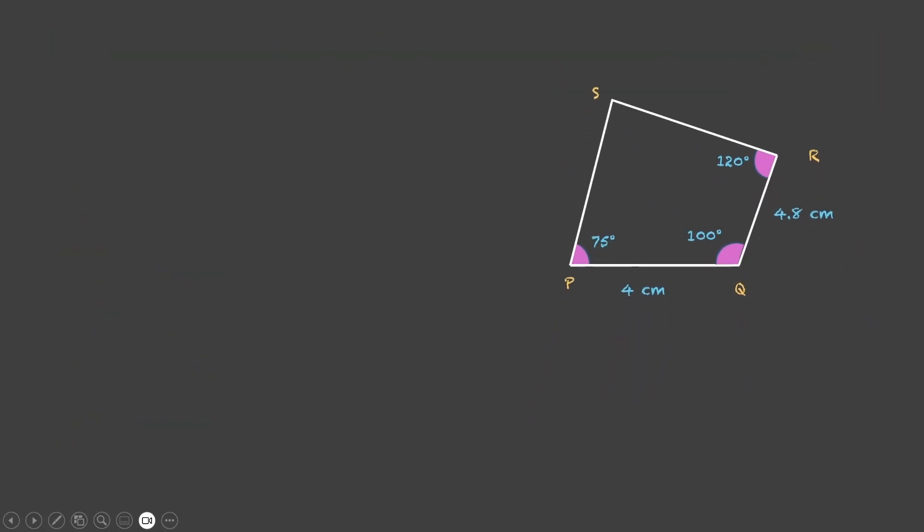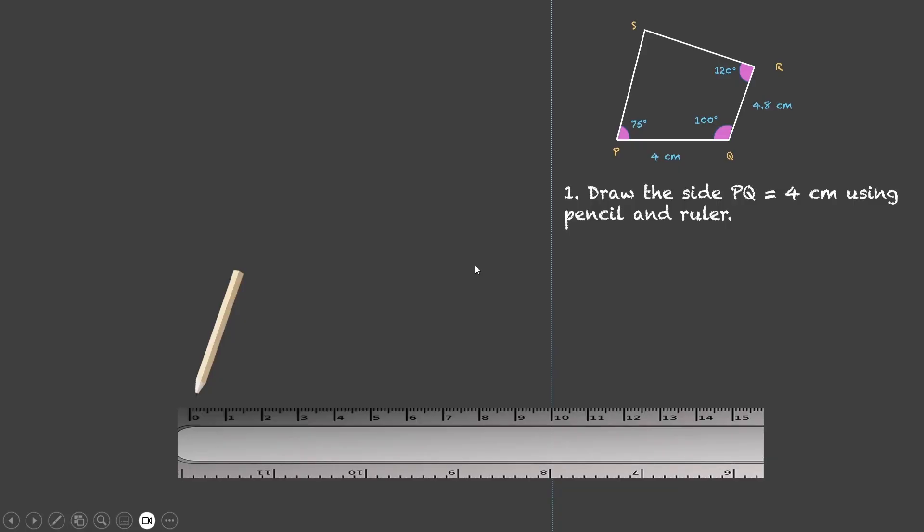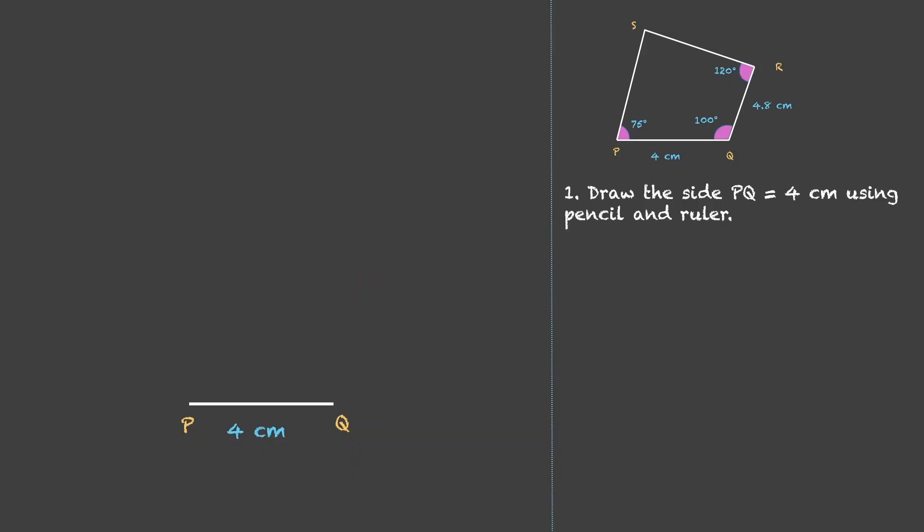So let us keep this as a reference. Over here our first step would be to draw the side PQ using pencil and ruler. So we will take a pencil, a ruler, and draw a line of 4 centimeters which is PQ.